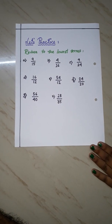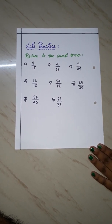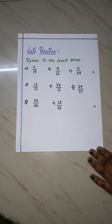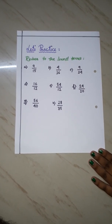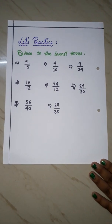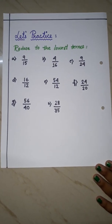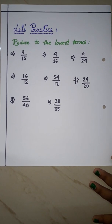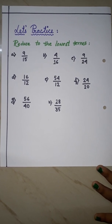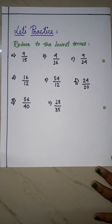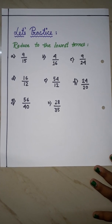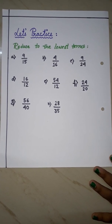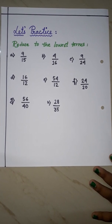Now these sums are for you to practice. Reduce to the lowest term — I have given 8 sums that you will do in your maths copy. Pause the video and take a screenshot so that you can write the numbers properly. I hope you all will do the sums properly at home. Stay good, stay happy. Thank you.